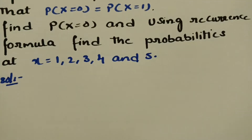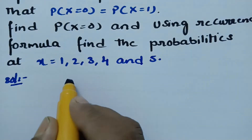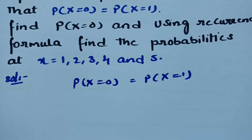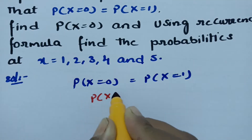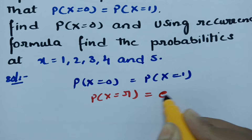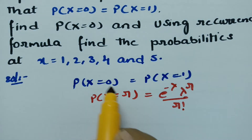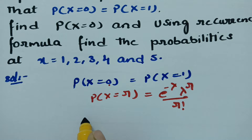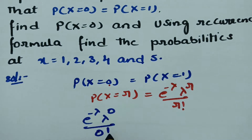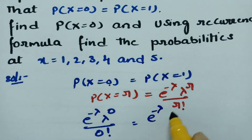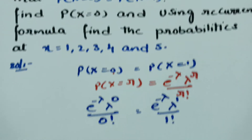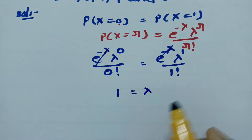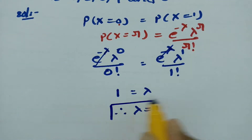In the question it is given that probability of X equals 0 is equal to probability of X equals 1. According to the Poisson distribution formula, probability of X equals r is equal to e to the power minus lambda, times lambda to the power r, divided by r factorial. Substituting r equals 0 and r equals 1 and cancelling e to the power minus lambda from both sides, anything to the power 0 is 1, so we get lambda equals 1.